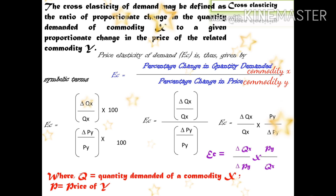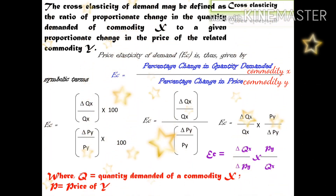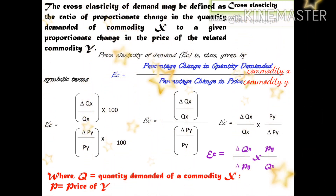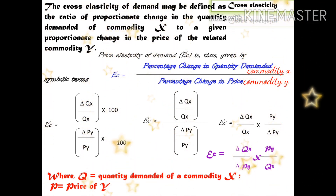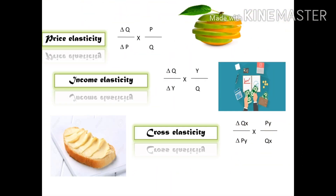Cross price elasticity equals the percentage change in quantity demanded of commodity X divided by the percentage change in price of commodity Y. Symbolically: del QX divided by QX multiplied by PY divided by del PY, where Q is quantity demanded of commodity X and P is the price of Y. The three elasticities are price elasticity, income elasticity, and cross elasticity.